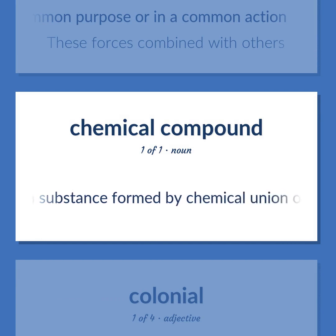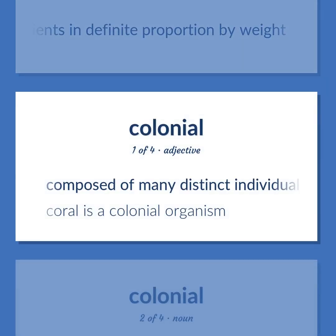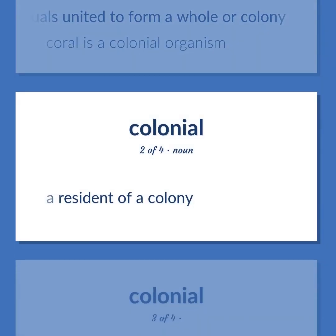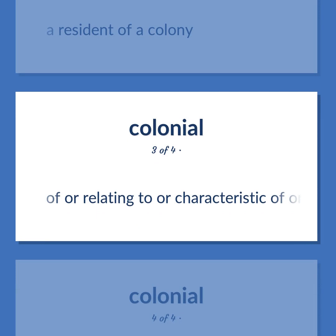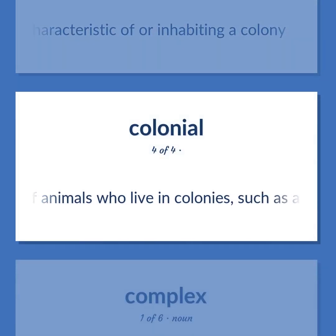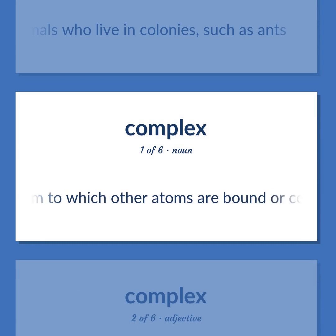Combine (chemistry): A substance formed by chemical union of two or more elements or ingredients in definite proportion by weight. Composed of many distinct individuals united to form a whole or colony — coral is a colonial organism. A resident of a colony. Of or relating to or characteristic of or inhabiting a colony. Of animals who live in colonies, such as ants. A compound described in terms of the central atom to which other atoms are bound or coordinated.